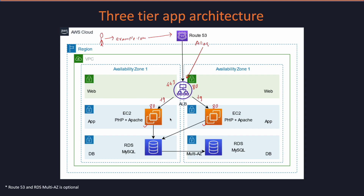If you want to further enhance this architecture, you can set up auto-scaling for your application instances, provided your application supports the same. Finally, in the DB tier, we can set up Multi-AZ RDS MySQL instances, which can be accessed from the app server on port 3306. If you are doing this as an exercise, you may choose to ignore the Multi-AZ configuration and set it up as a single RDS instance in any of the availability zones.